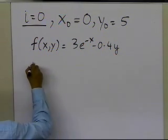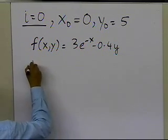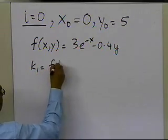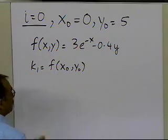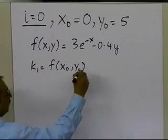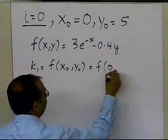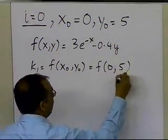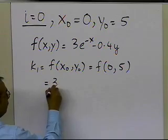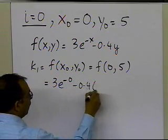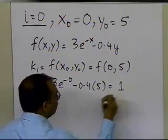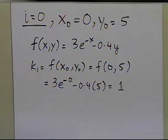I need to calculate k1. At i equal to 0, k1 is the value of the function at (x-sub-0, y-sub-0), which is (0, 5). That gives 3e to the power minus 0, minus 0.4 times 5, and that equals 1. So the value of k1 for the first step is 1.